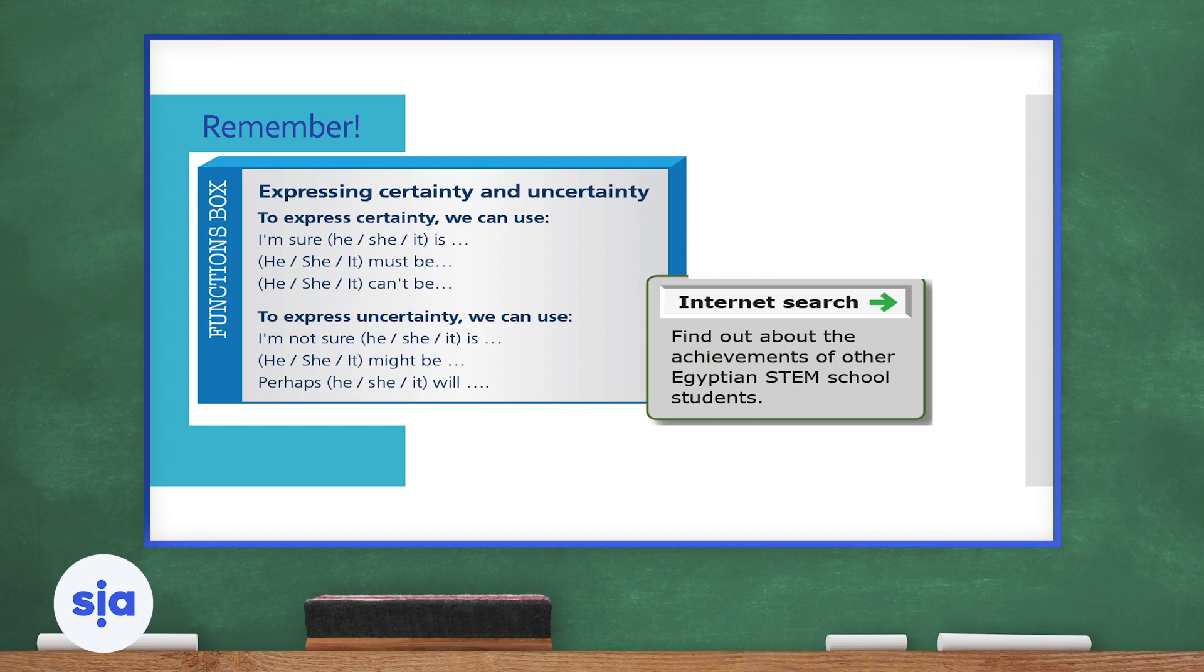Now we're going to start our internet search. So bring out your phones or your tabs or your laptops. And please let's look for or find out about the achievements of other Egyptian STEM school students. So I'm sure you're going to find a lot of students that are really doing very well in STEM schools and are creating or achieving results based on the information they're learning. So let's find out if there are more students other than Azza that we can read about. Egyptian students that have made achievements in the STEM schools.